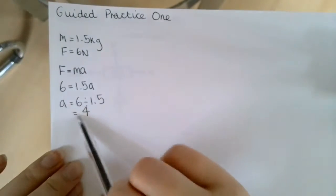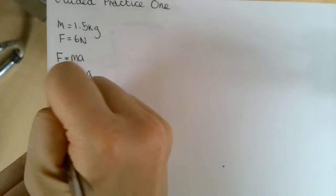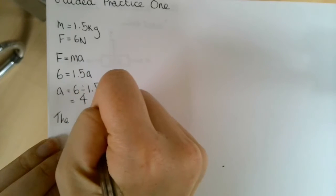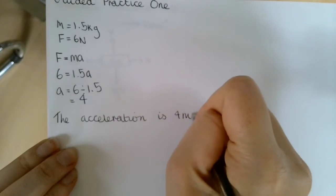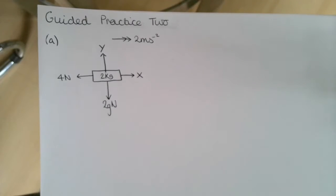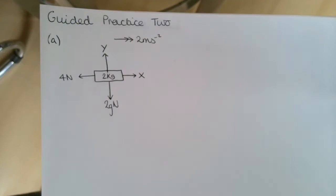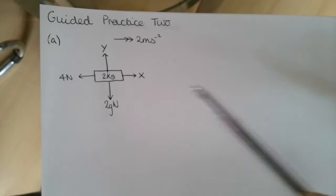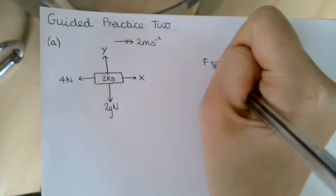So we've got the value of A. I would now write a sentence saying what A is with its units: the acceleration is 4 metres per second squared. For the second guided practice, we are given some force diagrams of a body that is accelerating, and we want to find the unknown forces X and Y. We're going to resolve horizontally and vertically using F equals MA.